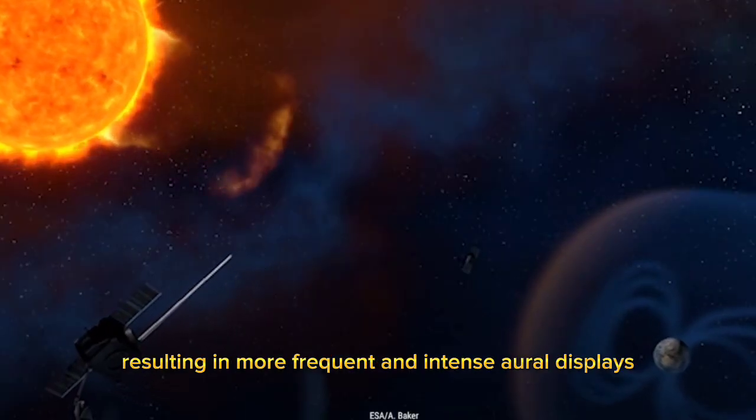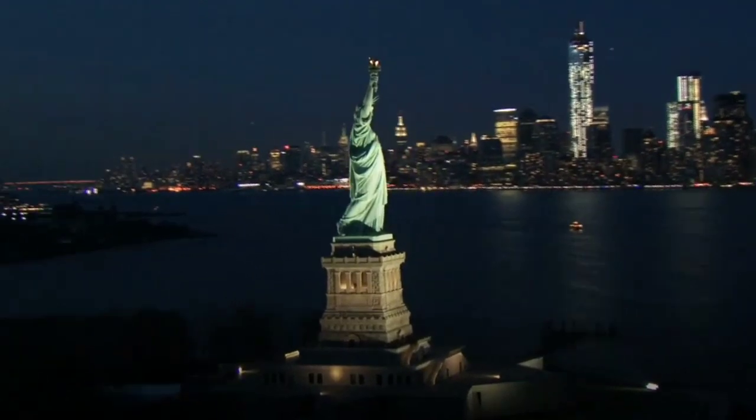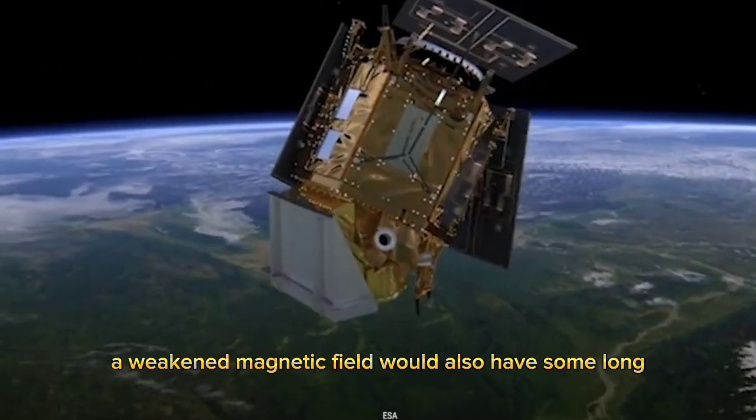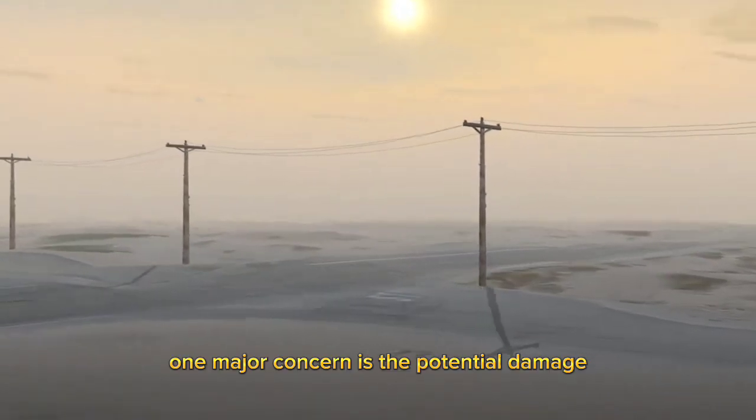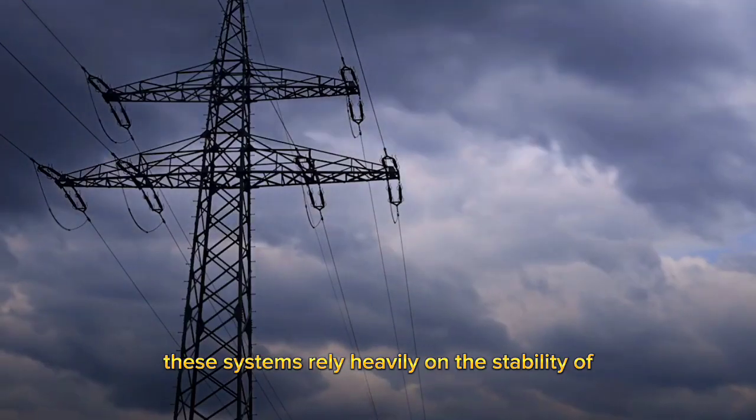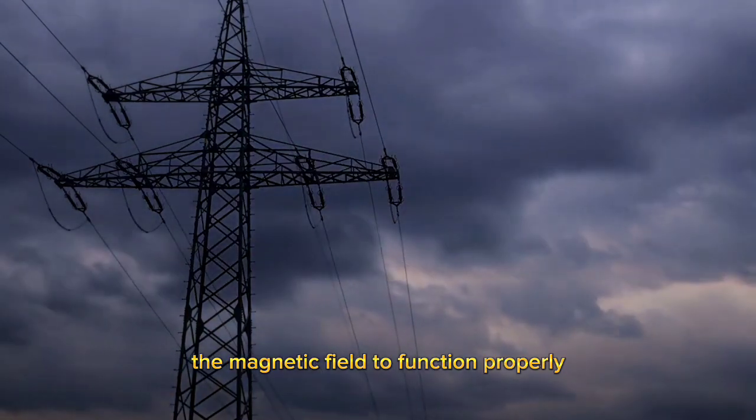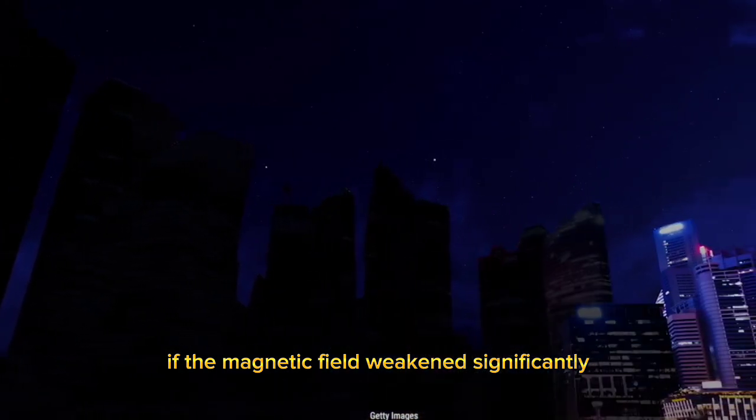But that's not all. A weakened magnetic field would also have some long-term consequences for our planet. One major concern is the potential damage to our electrical and communication systems. These systems rely heavily on the stability of the magnetic field to function properly.